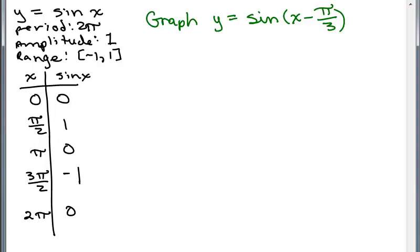Now we want to get the key points for this graph, and we have to pay attention to what we're taking the sine of. It's x minus π/3. We know the sine of 0 is 0, so what we want to do is take what's in parenthesis, x minus π/3, and set it equal to 0.